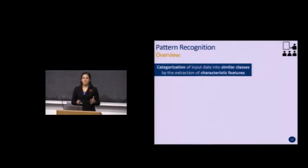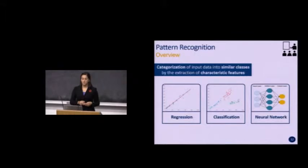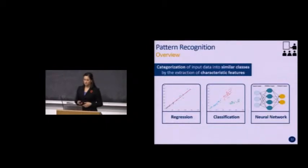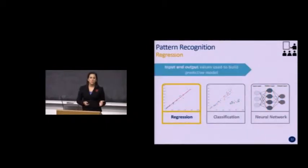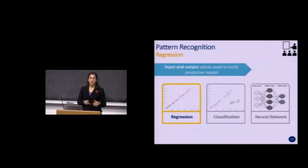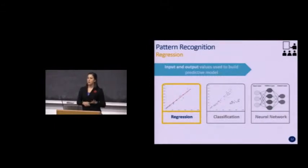There are many ways a program can be designed to recognize patterns, but three models are used most commonly: regression, classification, and neural networks — all three involving supervised learning. Regression models are the most simplistic, using a set of training inputs with a linear or higher-order regression to determine correlation between inputs and outputs. Regression is effective with a small number of factors but tends to fail with large, complex data sets, making it not ideal for medicine.